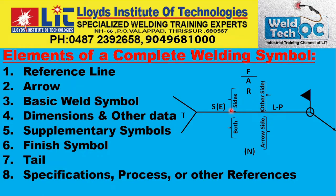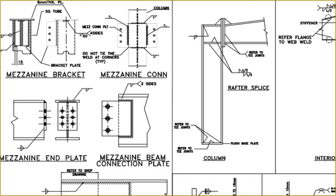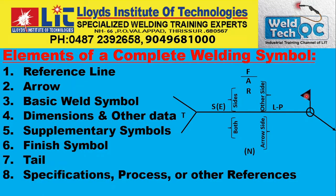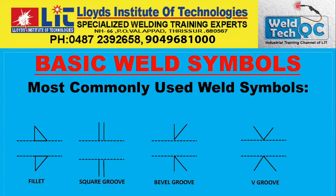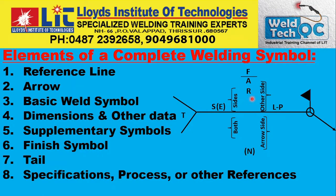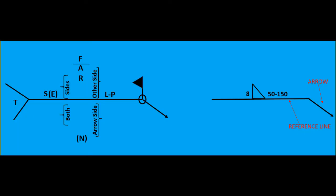On the reference line and arrow, you can mention whatever is required — the Weld symbol, dimensions, finish, or any supplementary information such as the Weld All Around symbol. The basic Weld symbols we discussed can be shown either above the reference line or below the reference line.